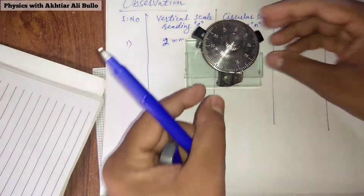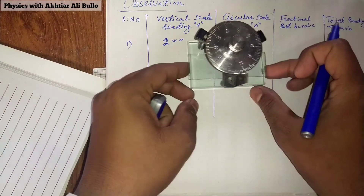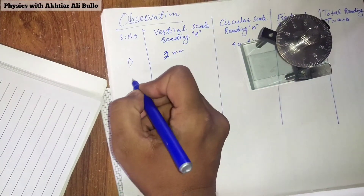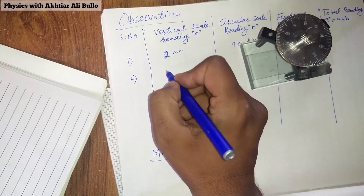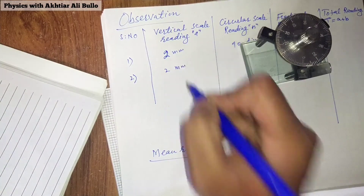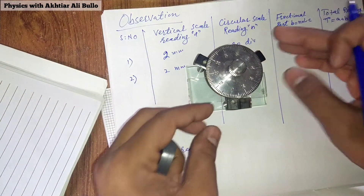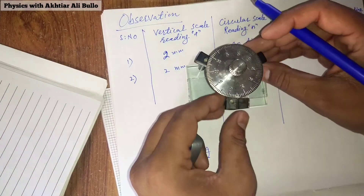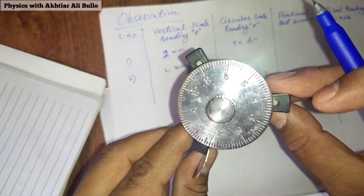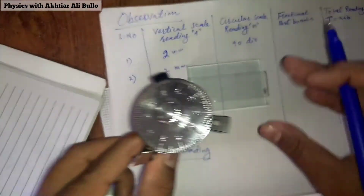The reading of the vertical scale remains the same, which is two millimeters. The reading of the circular scale changes. Now it is obtained as 93 divisions.